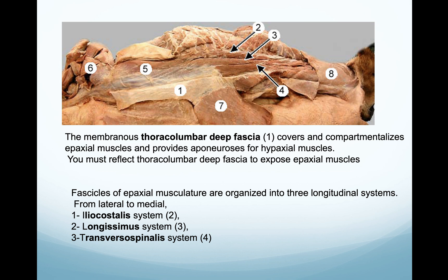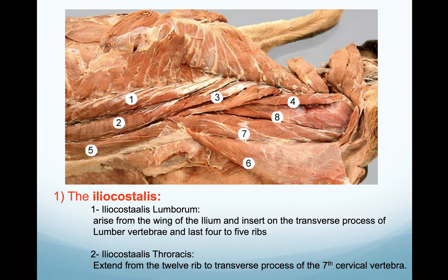This muscle consists of three longitudinal systems: the iliocostalis, which is the most lateral; the longissimus system, which is medial; and the transverse spinalis system, which is the most medial. This muscle is surrounded and covered by a fascia - both superficial and deep. The deep fascia is called the thoracolumbar fascia, and it surrounds each group and separates them into the three muscle groups.